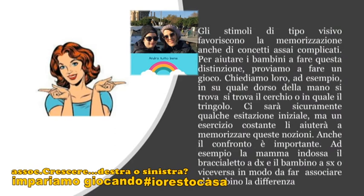Gli stimoli di tipo visivo favoriscono la memorizzazione anche di concetti assai complicati. Per aiutare i bambini a fare questa distinzione, proviamo a fare un gioco: chiediamo loro su quale dorso della mano si trova il cerchio o in quale il triangolo. Ci sarà sicuramente qualche esitazione iniziale, ma con un esercizio costante li aiuterà a memorizzare queste nozioni.